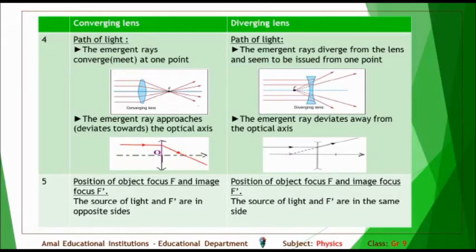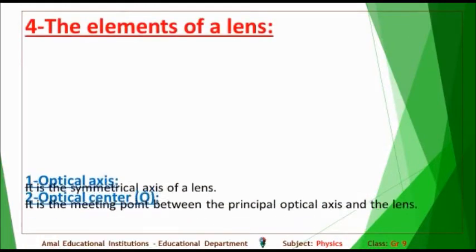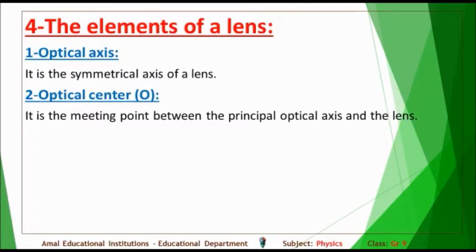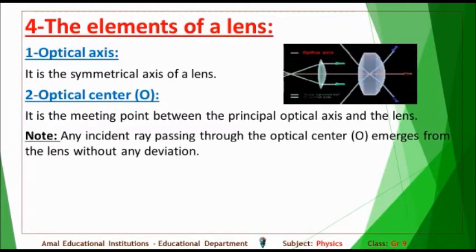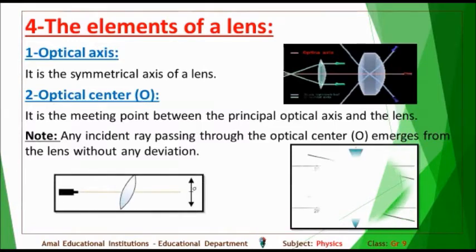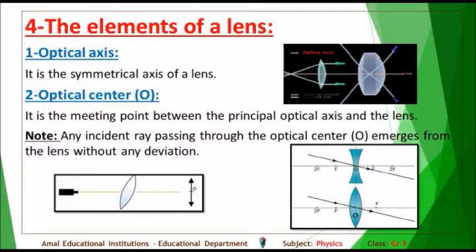Regarding the position of F and F prime: F is the object focus, F prime is the image focus. In a converging lens, F prime and the source of light are on opposite sides. In a diverging lens, the source of light and F prime are on the same side. The elements of a lens include: the optical axis, and the optical center O, which is the meeting point between the principal optical axis and the lens. Any incident ray passing through the optical center O emerges from the lens without any deviation, in both converging and diverging lenses.